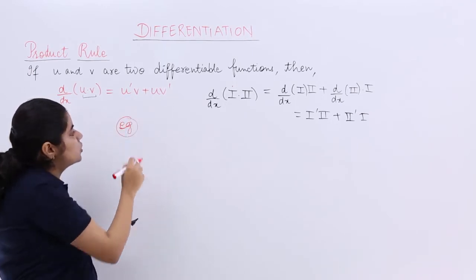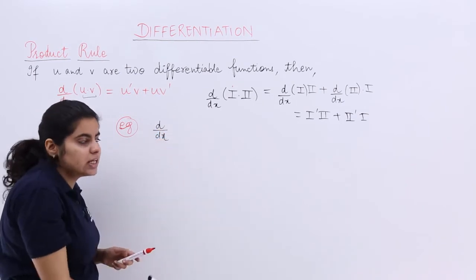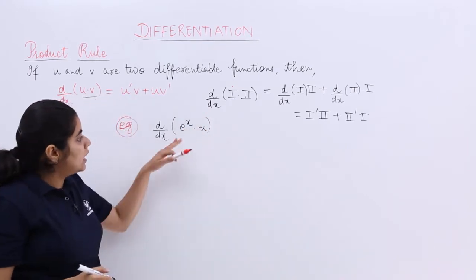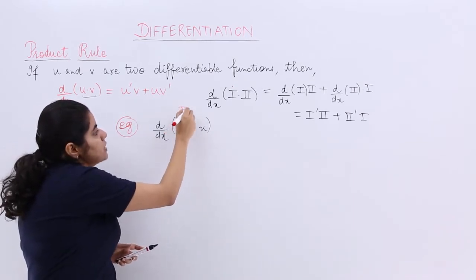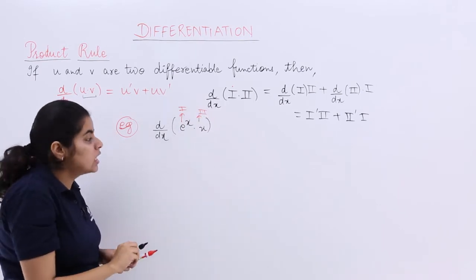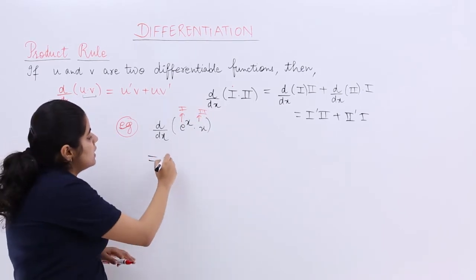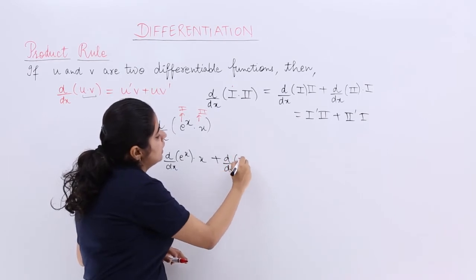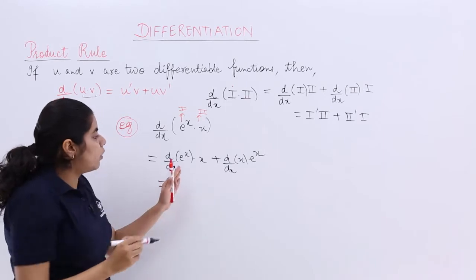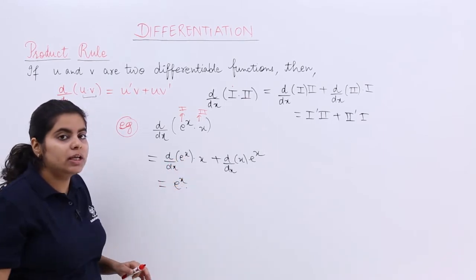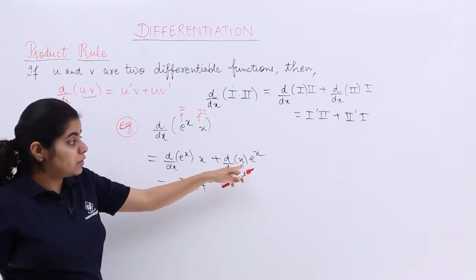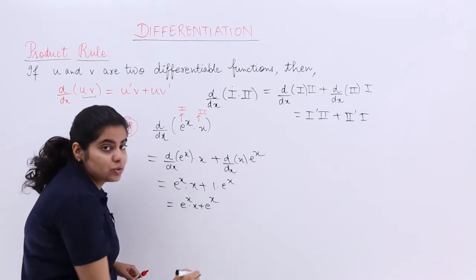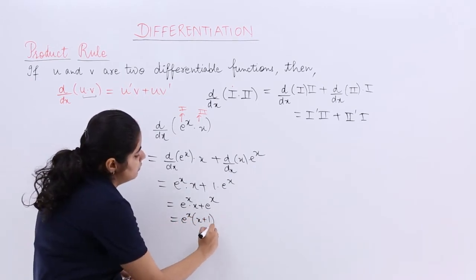Example 1: Differentiate e raised to the power x multiplied by x. Here, e^x is treated as the first function and x is treated as the second function. Applying the product rule: differentiation of first (e^x) multiplied by second (x) as it is, plus differentiation of second (x, which gives 1) multiplied by first (e^x) as it is. So we get e^x · x + 1 · e^x.